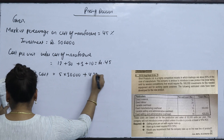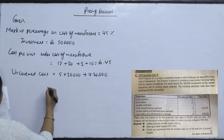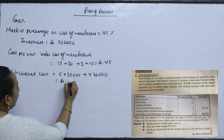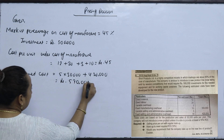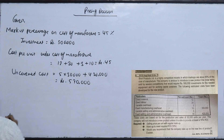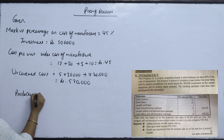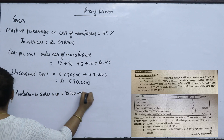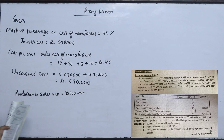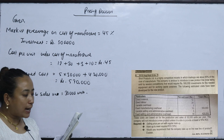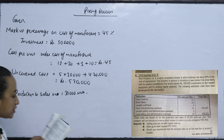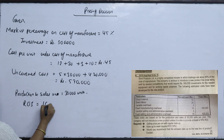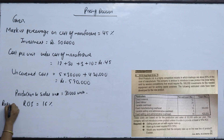The fixed selling and distribution cost is 4,02,000. The total non-manufacturing uncovered cost is 5,70,000. Production and sales units are 30,000 units per year. The company will not introduce the new product unless it is able to provide at least a 16% return on investment (ROI).